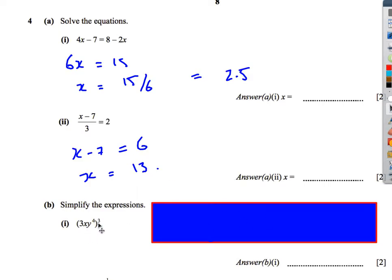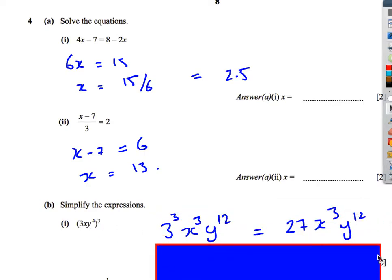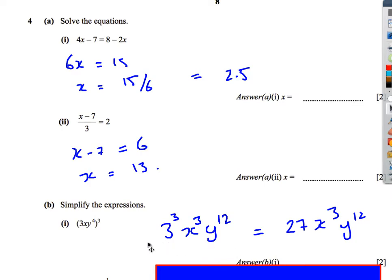Now some simplifying expressions. We have 3xy to the power 4, all cubed. We need to do each bit in turn: 3 cubed, x to the power 1 multiplied by 3 gives x cubed, and y to the power 4 multiplied by 3 gives y to the power 12. 3 to the power 3 is 27. So we get 27x cubed y to the power 12.